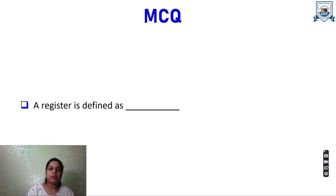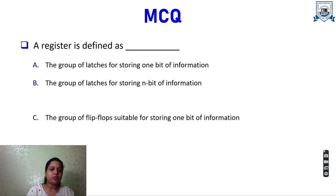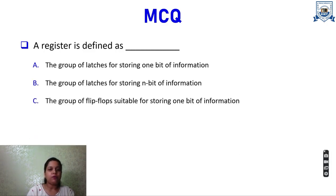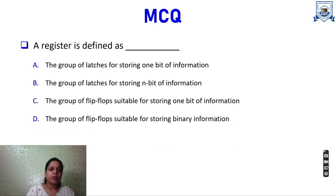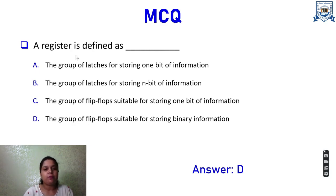Now for an MCQ. The question is: a register is defined as — (A) a group of latches for storing 1 bit of information, (B) a group of latches for storing n bits of information, (C) a group of flip-flops suitable for storing 1 bit of information, or (D) a group of flip-flops suitable for storing binary information. The answer is D — a group of flip-flops suitable for storing binary information. We discussed that registers are made of flip-flops, and with n flip-flops you get an n-bit register.